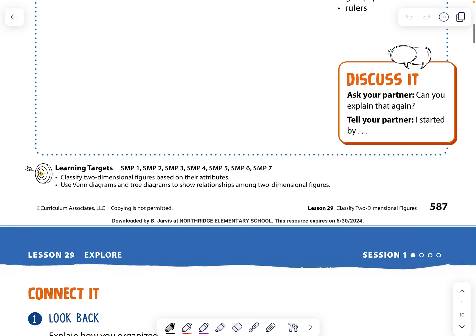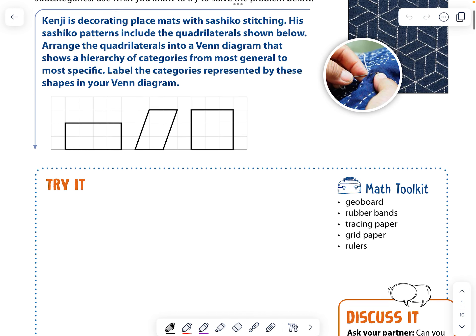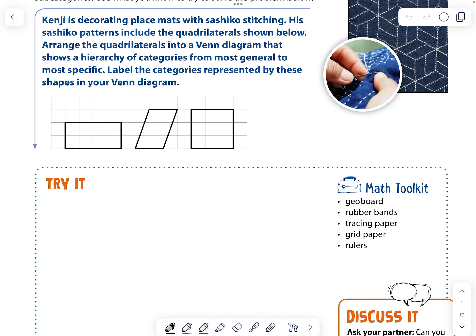We are on page 587 to start with. Kenji is decorating placemats with Sashiko stitching. His patterns include the quadrilaterals shown below. So here's the quadrilaterals.